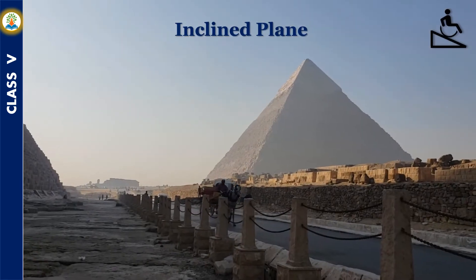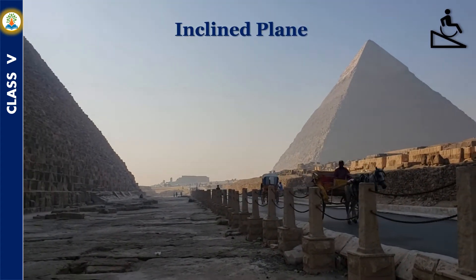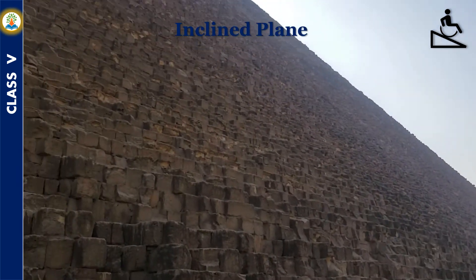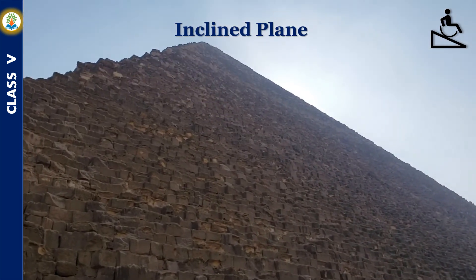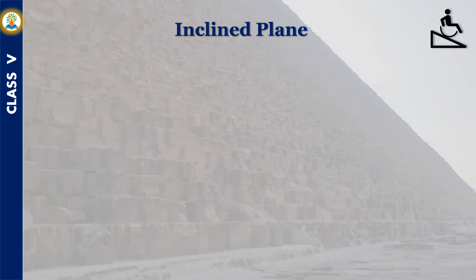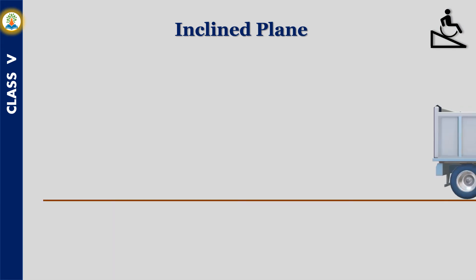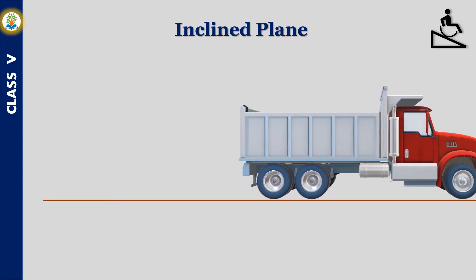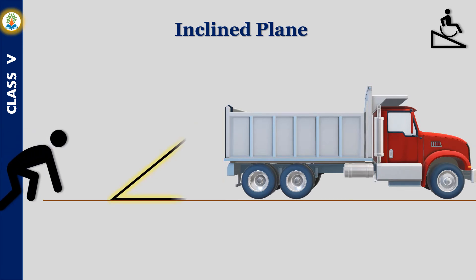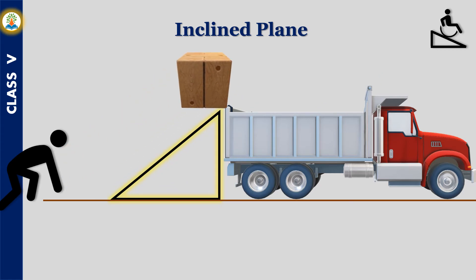Have you ever wondered how the ancient Egyptians lifted heavy stones to build the pyramids? They used a ramp, or an inclined plane. A normal person cannot load a heavy box into the rear of a truck easily, but by placing an inclined wooden plank from the rear of the truck to the ground, the person can do this more easily.